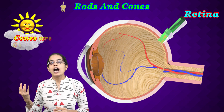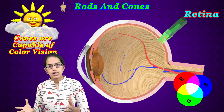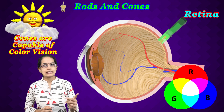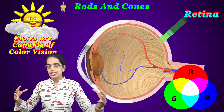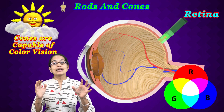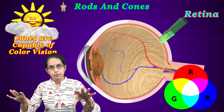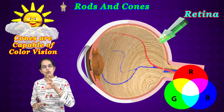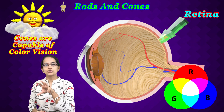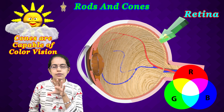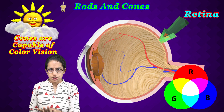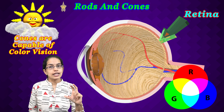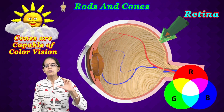Cones are associated with color vision. The main colors are RGB — red, green, and blue — and when all three are equally stimulated, white is perceived. Cones are predominant in day vision. These are the important concepts to understand under the retina.